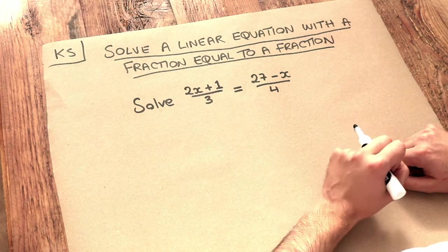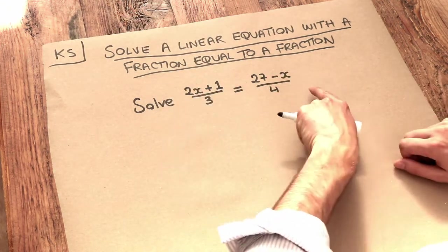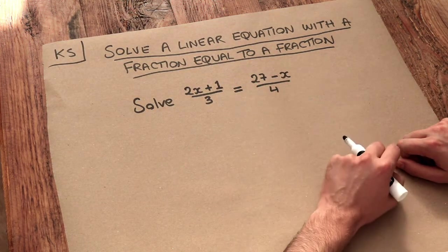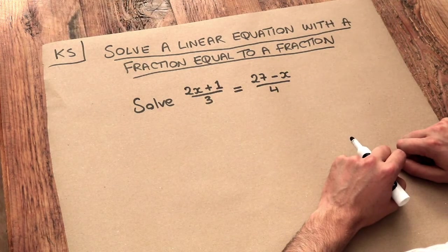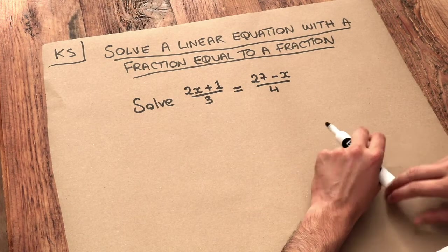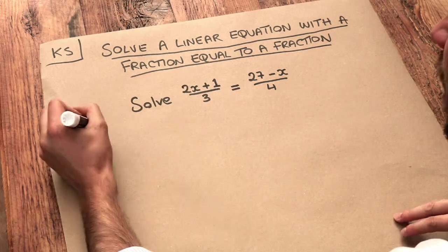Whenever you have a fraction equal to a fraction with nothing else added or subtracted after these fractions, we can use a method called cross multiplication. Let me describe how this works.